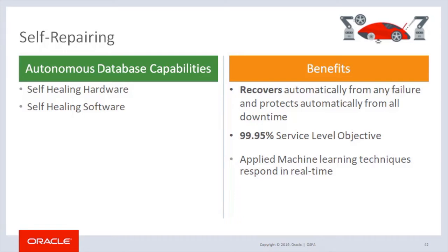Oracle MAA is a set of advanced technologies and best practices that can be deployed to handle any level of requirement, with solutions ranging from periodic backups to zero data loss and zero replication-based disaster recovery. The MAA portfolio is also available in the cloud and has been enhanced with automated functionality that minimizes, and in many cases eliminates, human intervention.